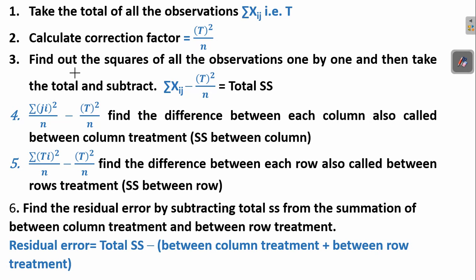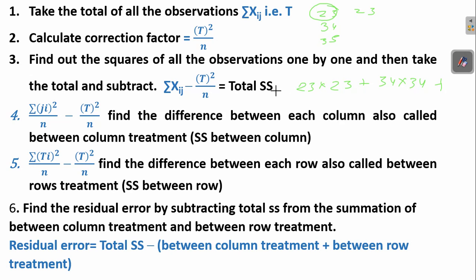The third step is to find the squares of all the observations one by one, take the total, and then subtract the correction factor. So suppose we have values like 23, 34, 35 — we square each value: 23×23, 34×34 and so on. Once we have the sum of all those squares, we subtract the correction factor to get the total SS — the total sum of squares.